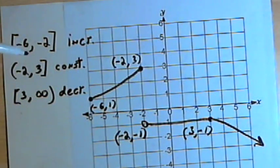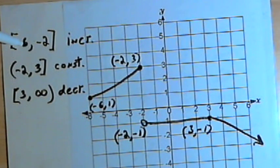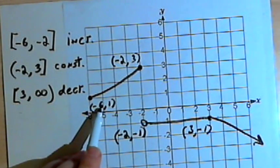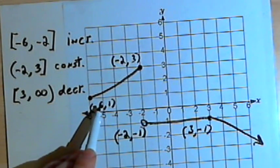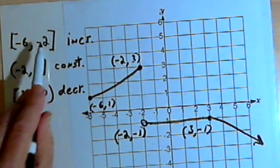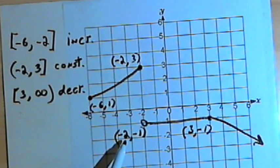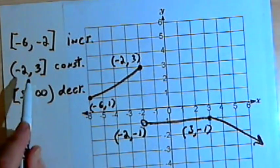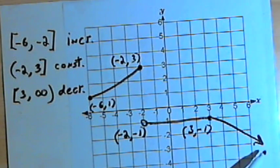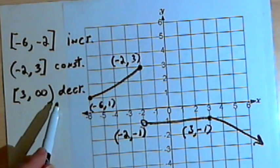Notice, again, when I write the intervals to show where it's increasing or constant or decreasing, the only numbers I'm using are the ones that indicate the x values. The negative 6, negative 2 for the increasing, and then the negative 2 and positive 3 for constant, and then 3 and infinity for decreasing.